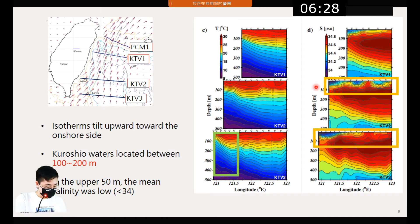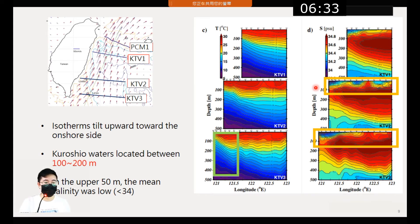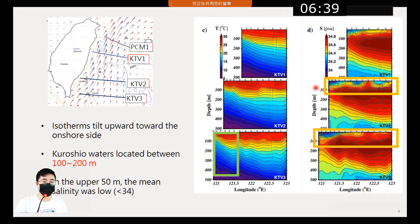This low salinity in the upper 50 meters is one piece of evidence for the intrusion of South China Sea water, because the South China Sea water salinity is lower than Kuroshio waters.